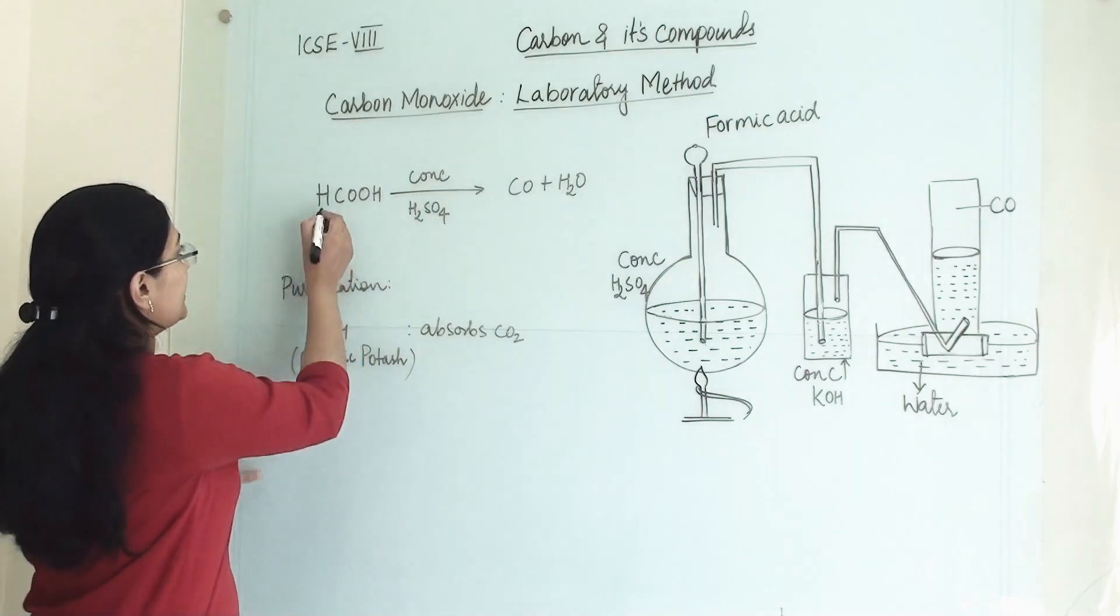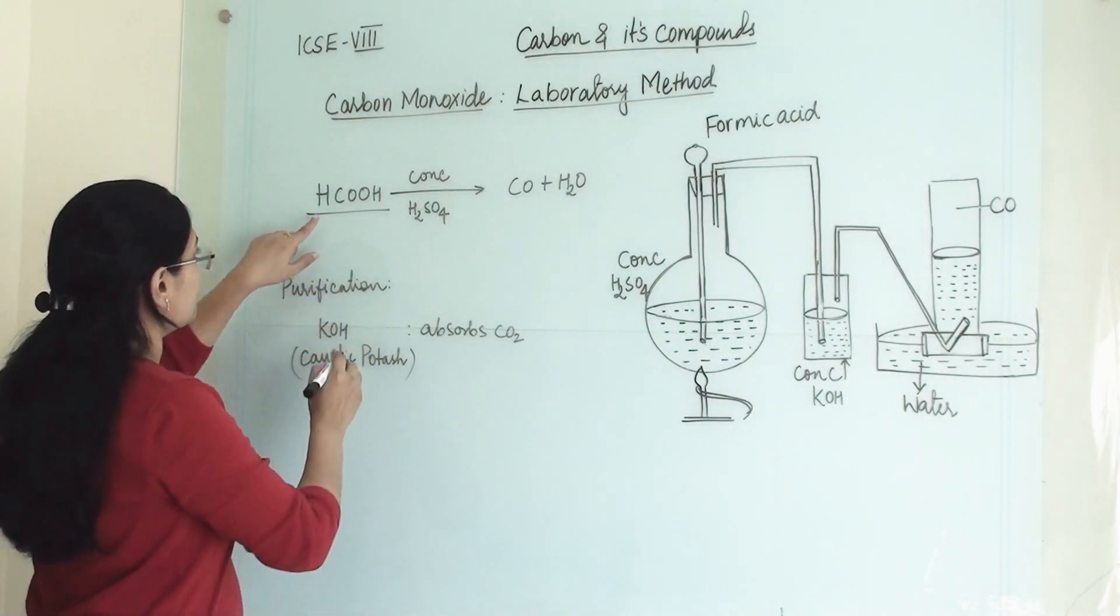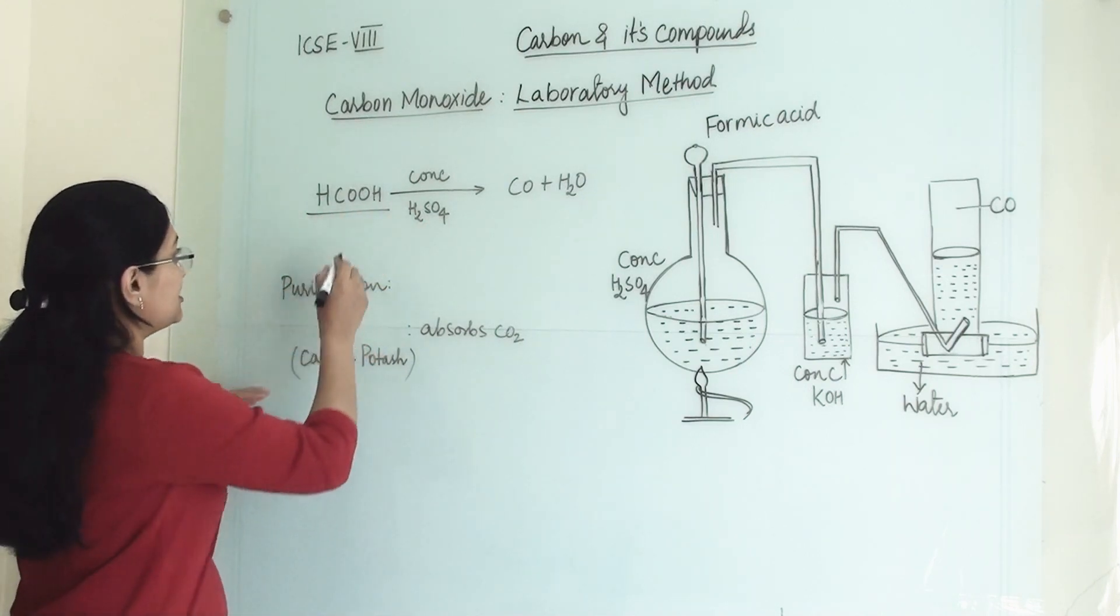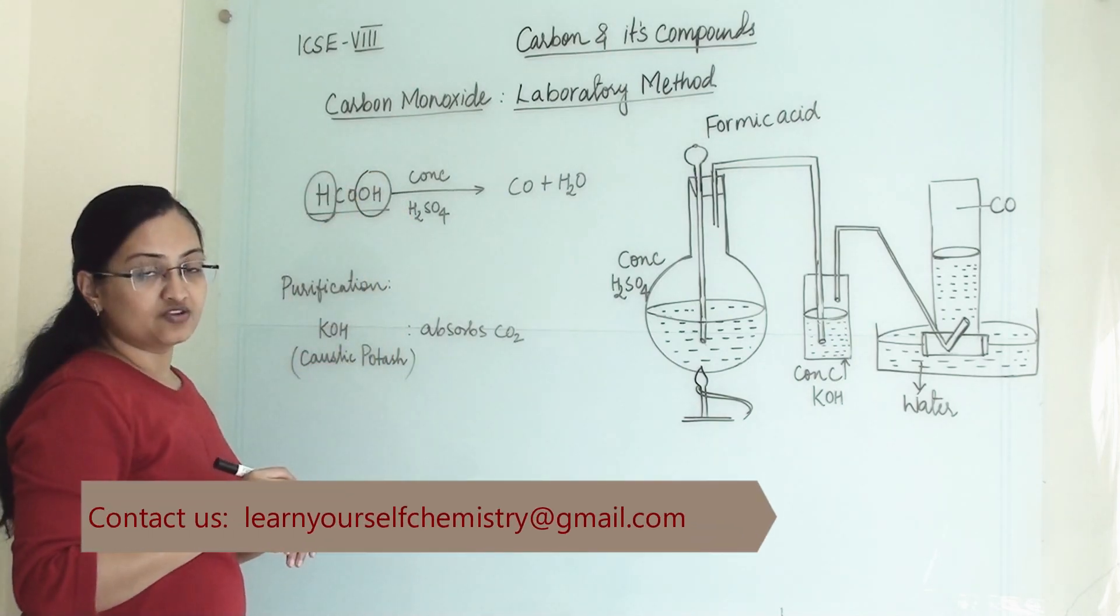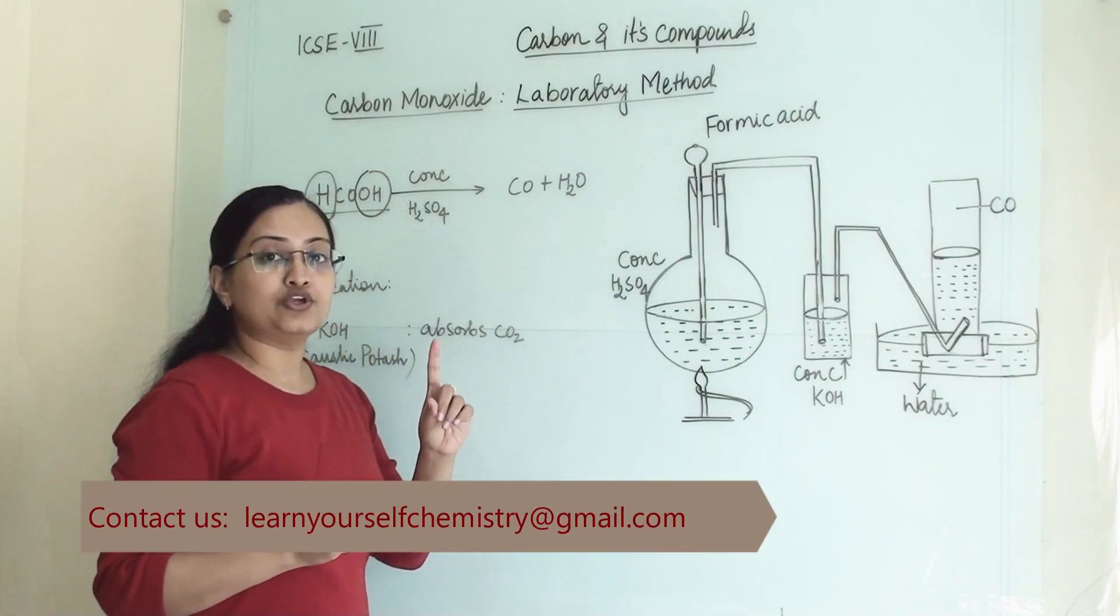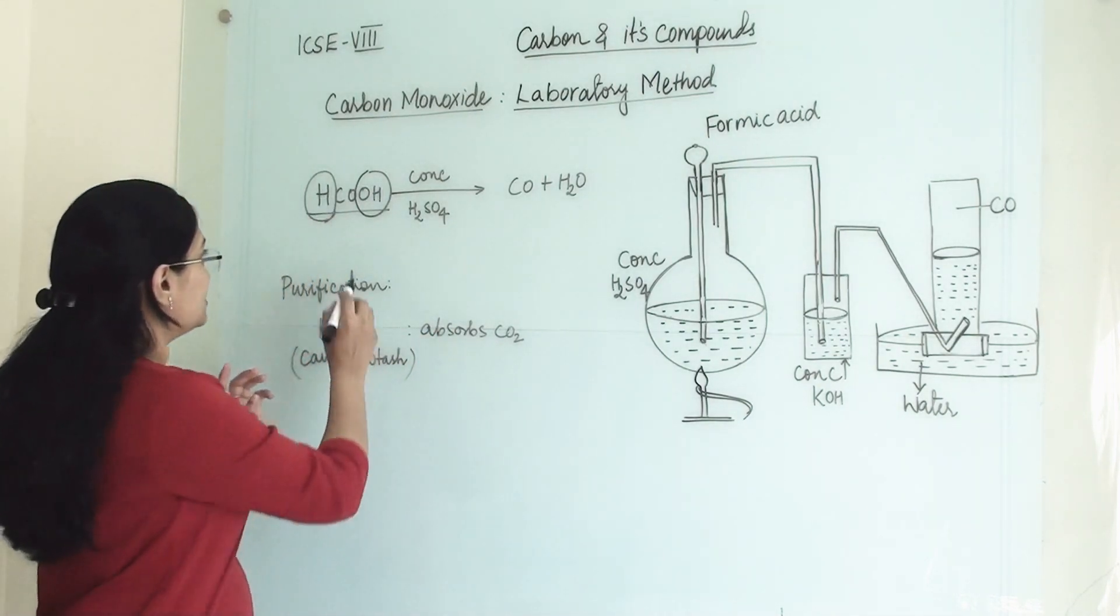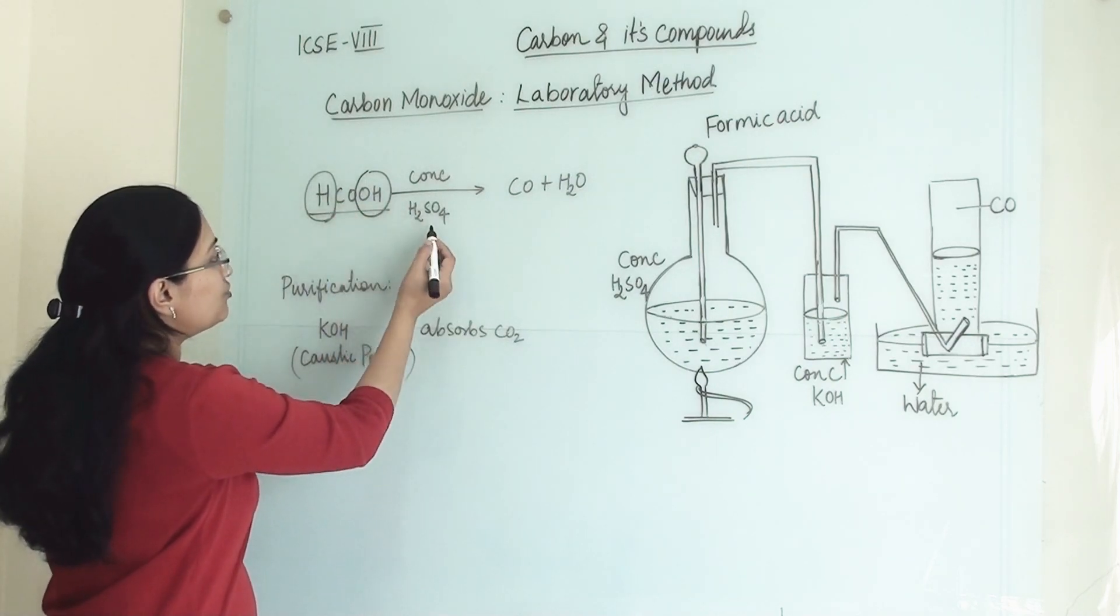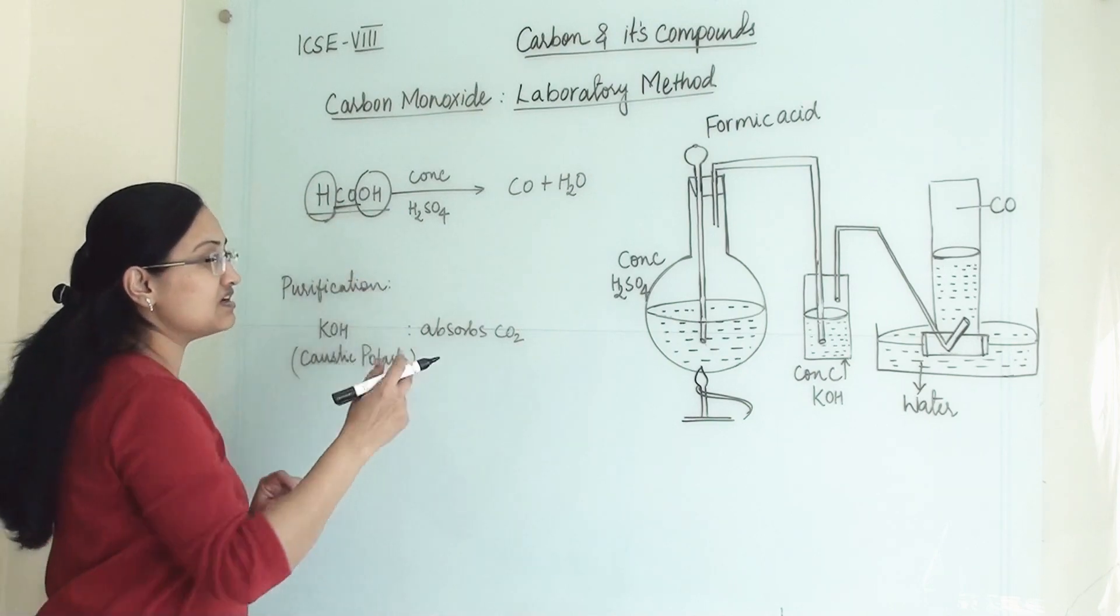This is the molecular formula of formic acid. Concentrated H2SO4 is a dehydrating agent and it will take out the water molecule from this formula. So one molecule of formic acid will give us one molecule of water. So this OH and this H will be removed by concentrated H2SO4, and remaining this CO is our product.